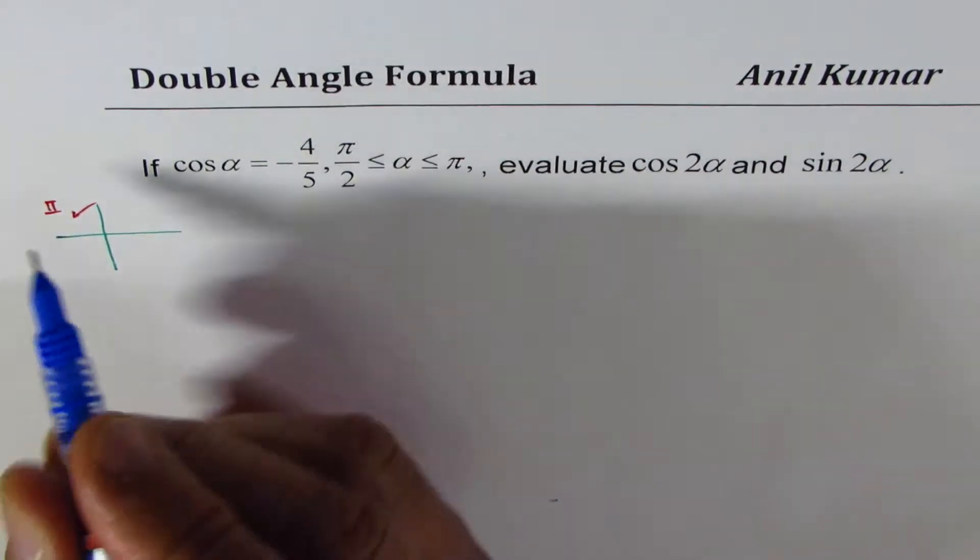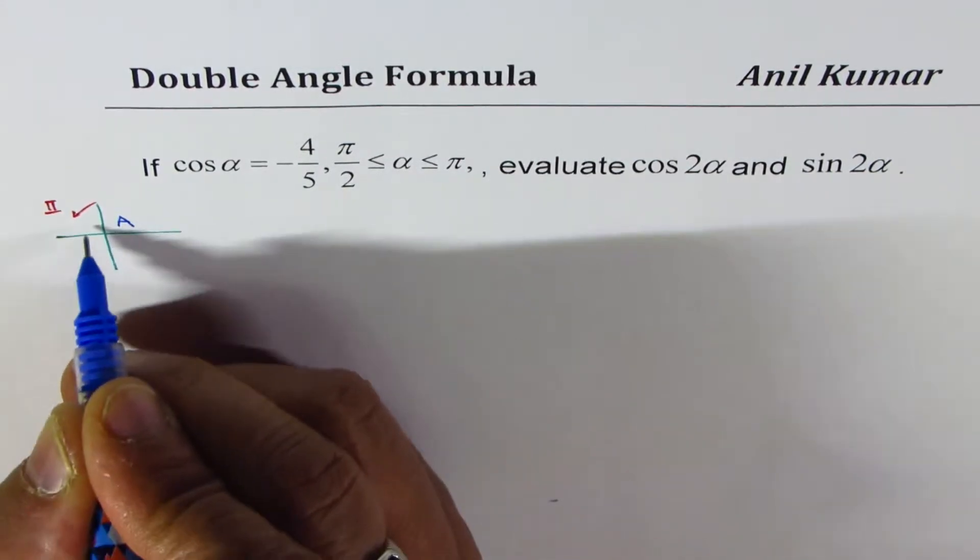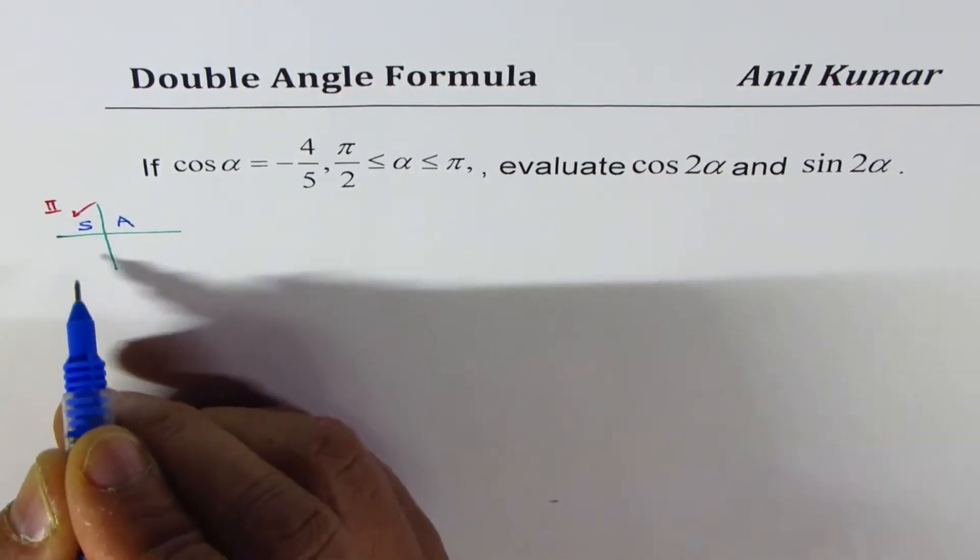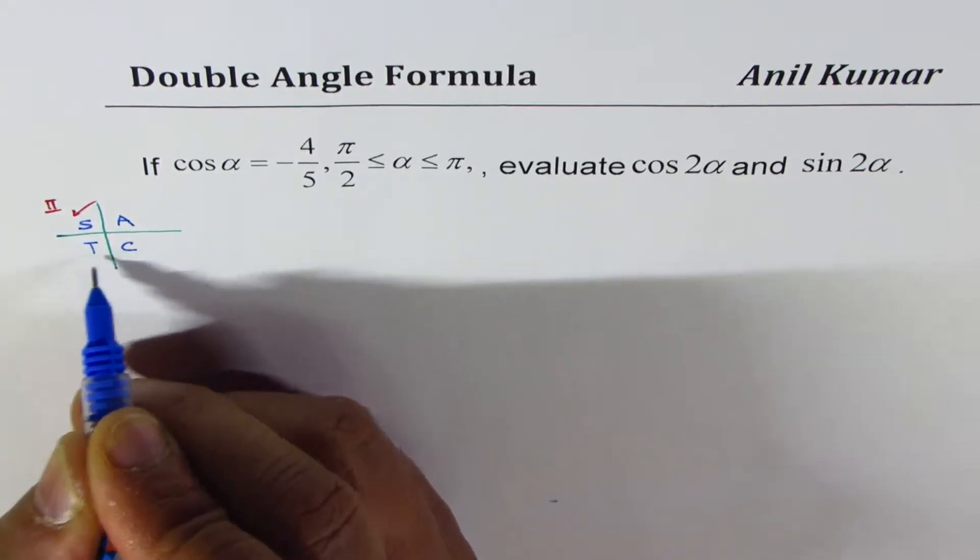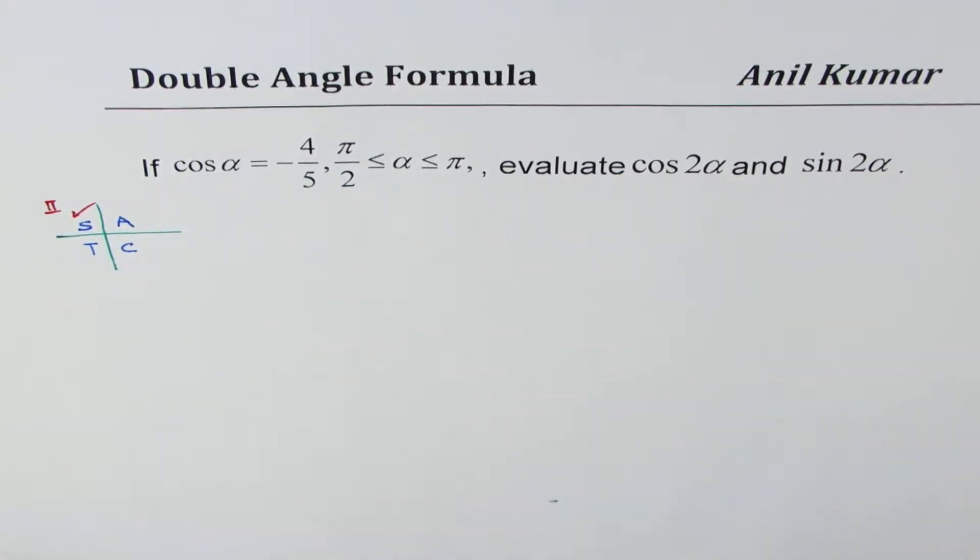In quadrant 2, applying the rule, all are positive in 1, only sine is positive in quadrant 2, tan and cosine are positive in 3 and 4 quadrants.